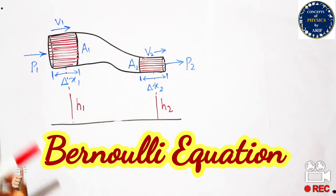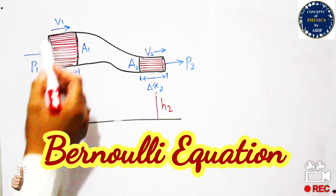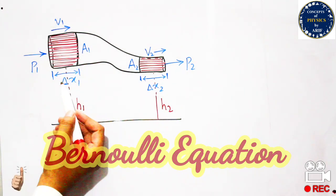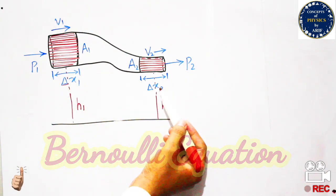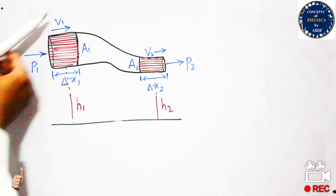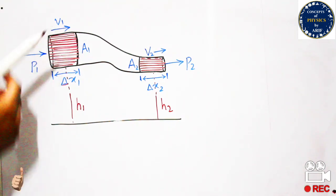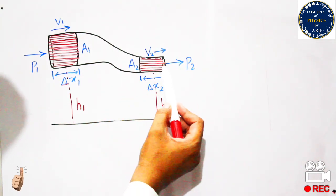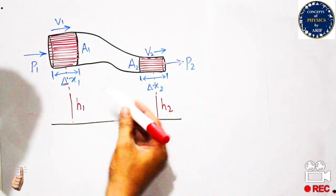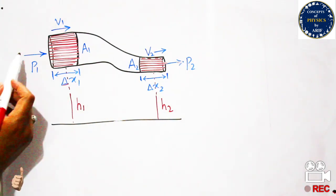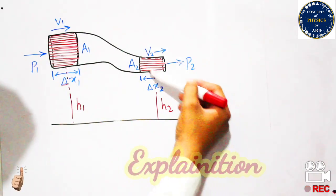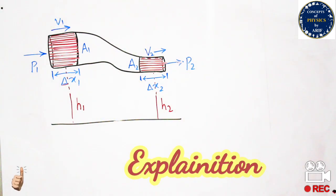We will consider a pipe of irregular shape in which there is a shaded area for region one with area a1, and a shaded area for region two. The fluid flow moves in region one with displacement delta x1, velocity v1, and pressure p1. In region two, the fluid flows outward, with heights h1 and h2 for the respective regions.